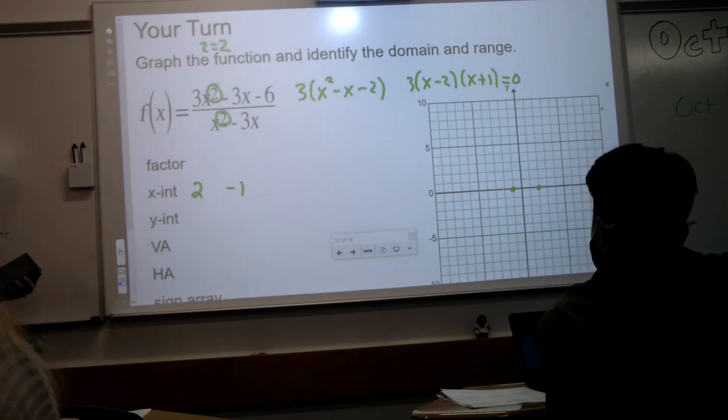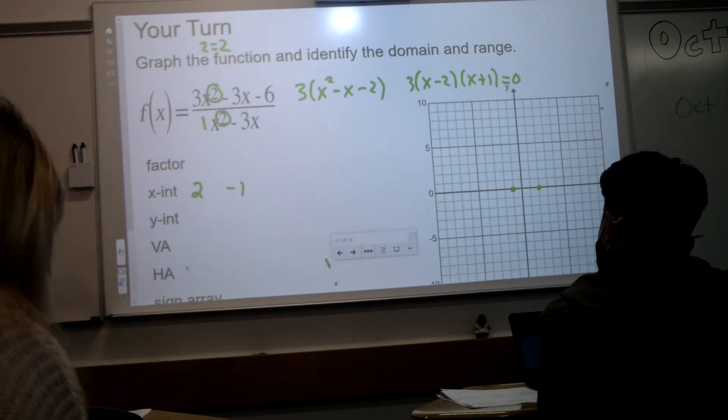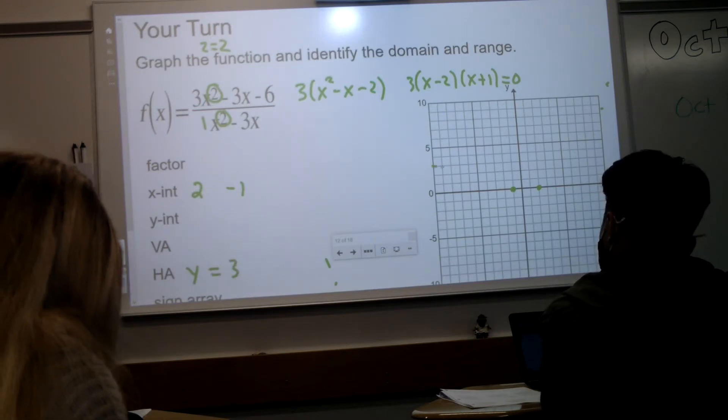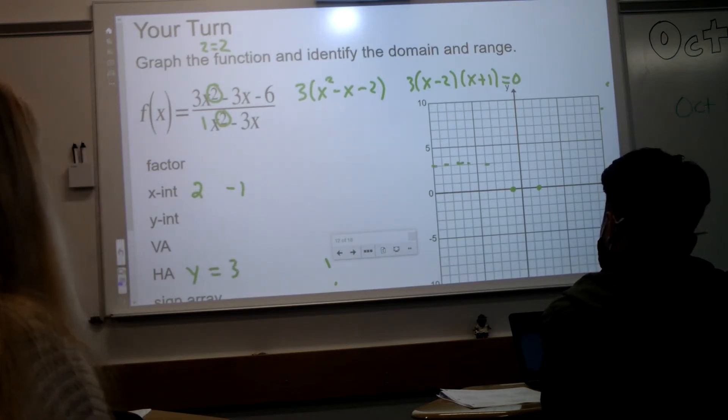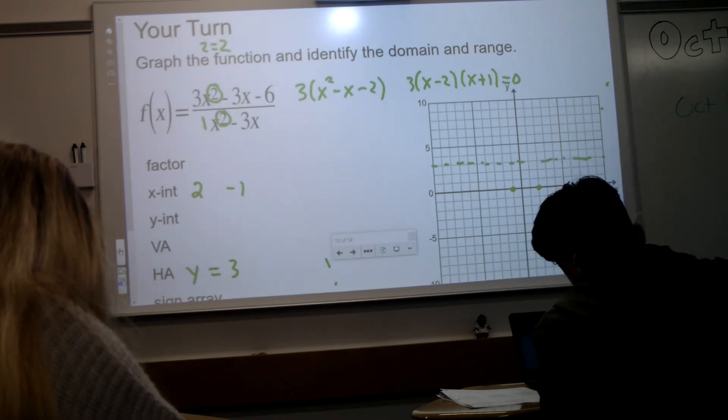What does that tell you? So if I look at three over one, that's going to be three. Your horizontal asymptote right here. Okay, awesome.